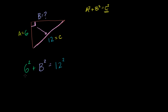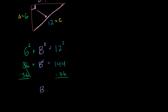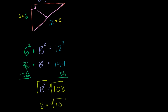So 6 squared is 36, plus b squared, equals 12 squared which is 144. We subtract 36 from both sides — those cancel out — and on the left hand side we're left with just b squared equals 144 minus 36, which is 108. So b squared equals 108. We take the principal root of both sides and get b equals the square root of 108.